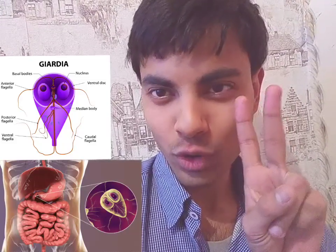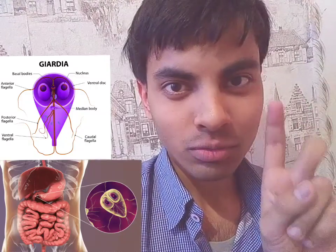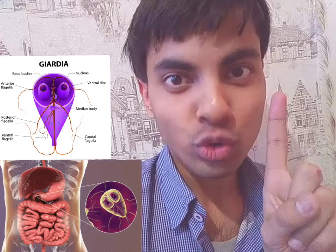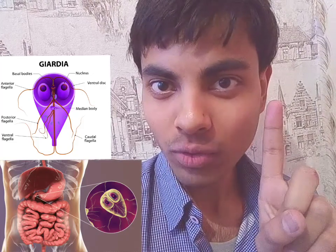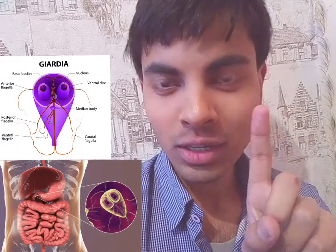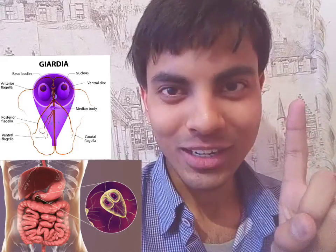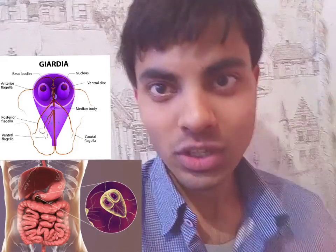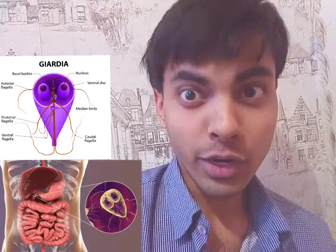It exists in two forms. First, trophozoite - motile form, moving around. It has flagella for moving. And second form is cystic form, cyst, which is immotile and which forms in adverse conditions, difficult conditions.